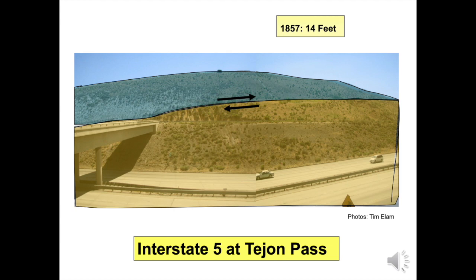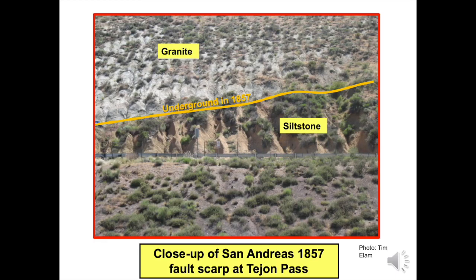In a matter of seconds, the Pacific Plate, shaded blue, moved northwest relative to the North American Plate, shaded orange. This 1857 offset is now thought to be 14 feet at Tejon Pass. When an earthquake occurs, only a tiny fraction of the energy released is felt at the surface of the earth. Most of that energy is dissipated far below the surface. But repeated earthquakes along the San Andreas have crushed rock. Thanks to this road cut, this photo shows crushed granite and siltstone separated by the orange scarp line. Accelerated weathering is evident from the vertical rills that drain water off the slope, though plants try to establish roots in the porous rock.